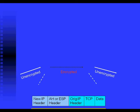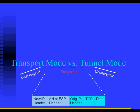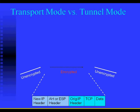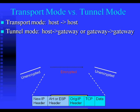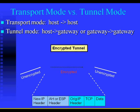Now let's look at the diagrams showing the encryption methods — a new IP header, authentication, and Encapsulating Security Payload. Transport mode versus tunnel mode: transport mode is host-to-host, while tunnel mode is host-to-gateway or gateway-to-gateway.